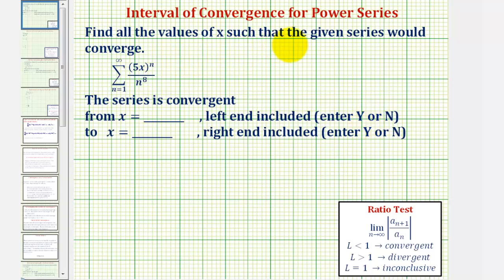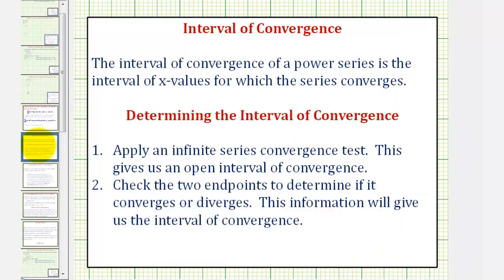We want to find all the values of x such that the given series would converge. This is called the interval of convergence of the power series, where the interval of convergence is the interval of x values for which the series converges. To determine the interval of convergence, step one, we'll apply an infinite series convergence test, and this will give us an open interval of convergence. Step two, we'll check the two endpoints to determine if the series converges or diverges, and this information will give us the interval of convergence.